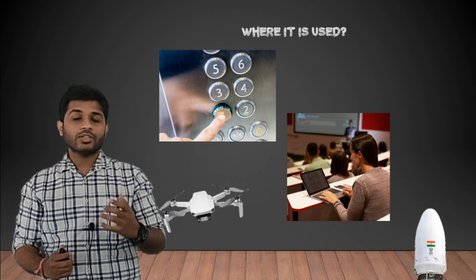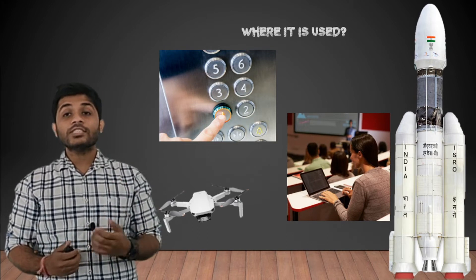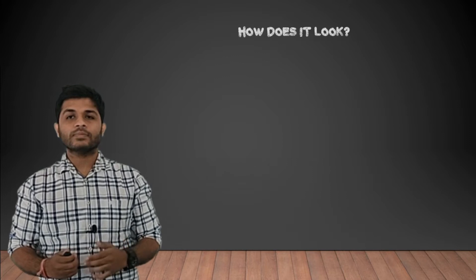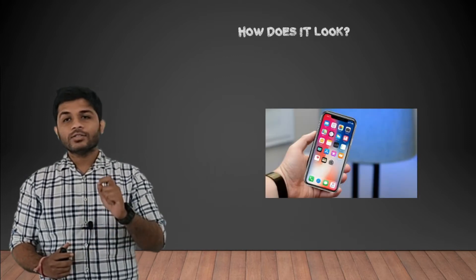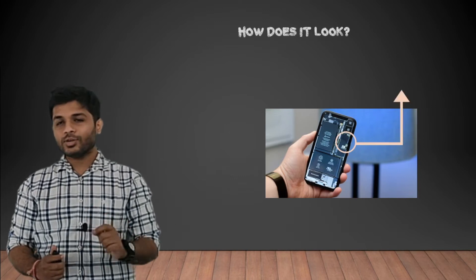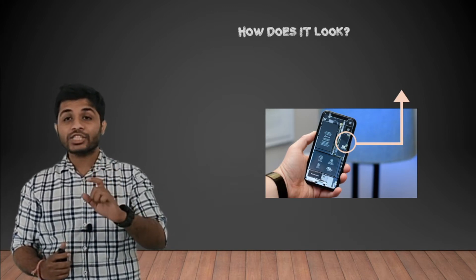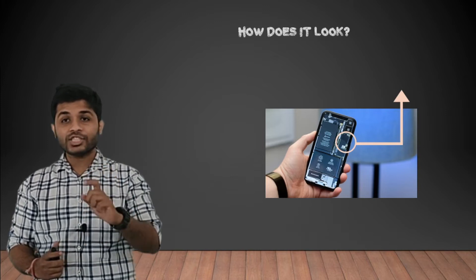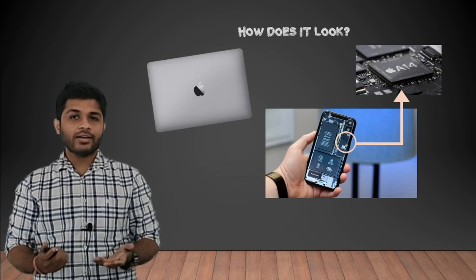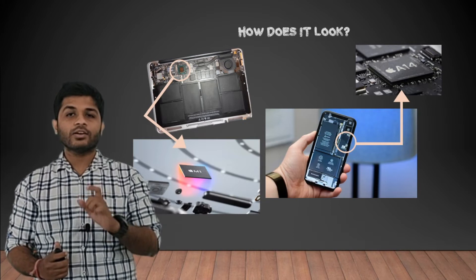So like I said, we are all surrounded by systems that include a microprocessor, from small drones to large rockets. Now the second question remains: how does a microprocessor look? To see a microprocessor, you can open your phone — though I don't suggest literally doing that — and inside you will see a black chip with some brand name written on it, and that black chip is the microprocessor. Similarly, inside a laptop you will see a chip with a brand name, and that is the microprocessor.